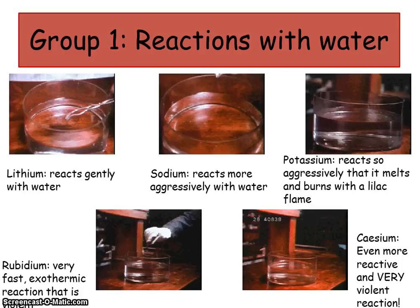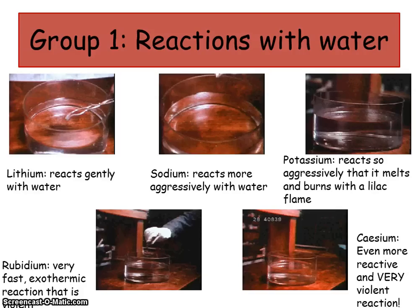Sodium reacts a bit more aggressively, and as the particles on the outside of sodium react with the water, it actually makes the metal spin into a kind of ball because it's reacting so quickly — it forms a near enough perfect sphere. Then the last one, potassium, actually sets on fire on top of the water because it's so aggressive and it burns with a lilac flame. We can't do rubidium or caesium in school because they are such violent reactions — they could break the container into lots of pieces. It's very dangerous.